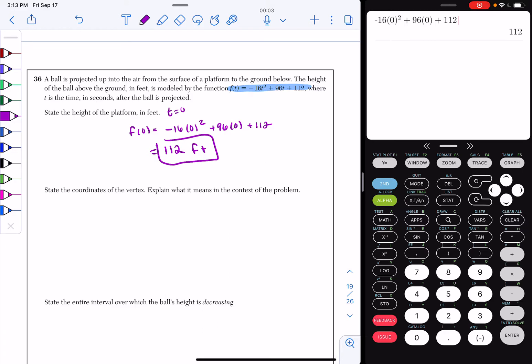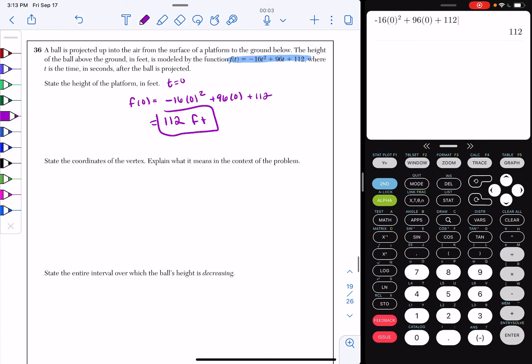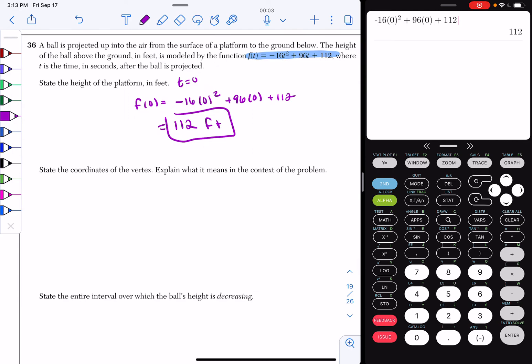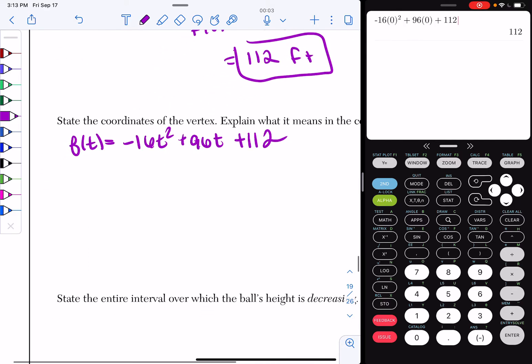Part B says state the coordinates of your vertex. Now, it's not saying how to find your vertex. You can use the calculator for this or you can do it by hand. I'm going to solve it by hand and then use the calculator. So, if we have the equation f(t) = -16t² + 96t + 112, I can find the vertex of this by using the axis of symmetry formula, which is x = -b/(2a).